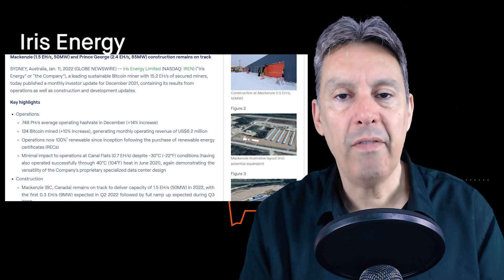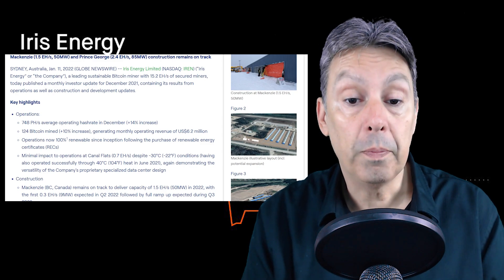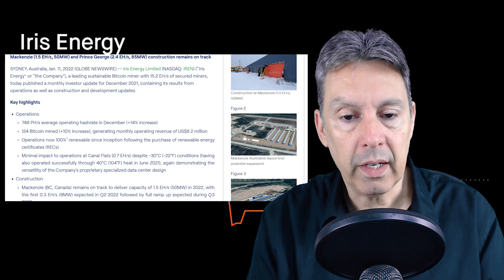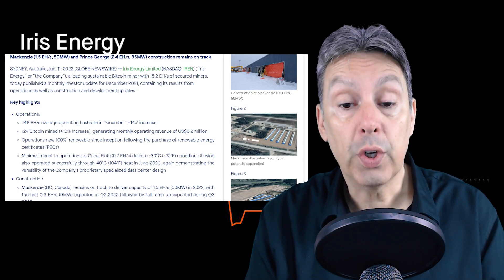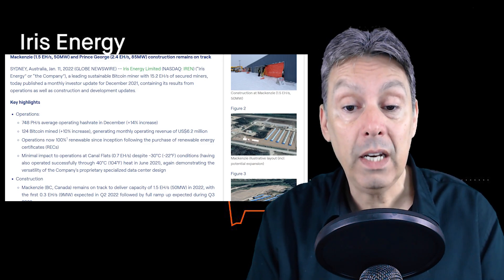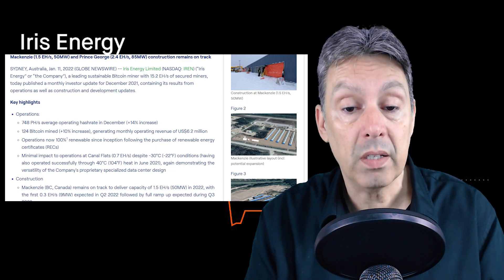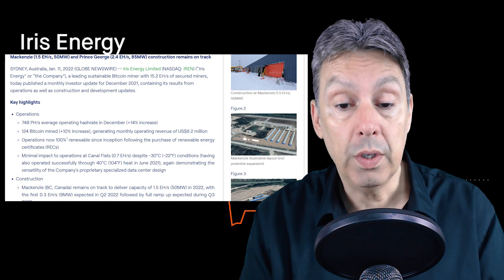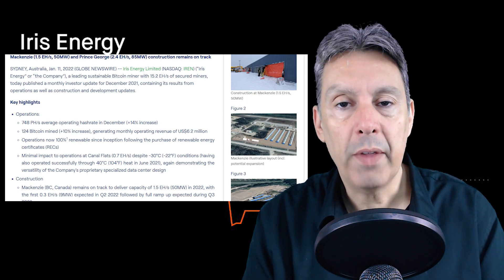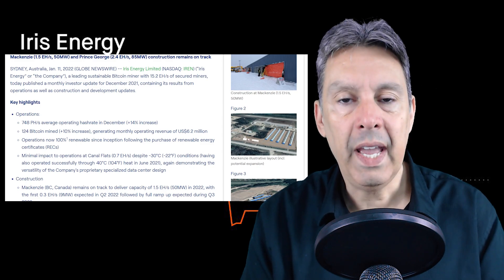Next they talk about the extreme temperatures they're under and that has had minimal impact on their production. Minimal impact to operations at Canal Flats, which currently has their 0.7 exahash up and running, despite negative 30 degrees Celsius conditions and having previously operated successfully through 40 degrees Celsius, which is 104 degrees Fahrenheit. So this operation has had extreme weather on both sides and they're saying their operations are fine. They can handle the extreme heat and they can handle the extreme cold.